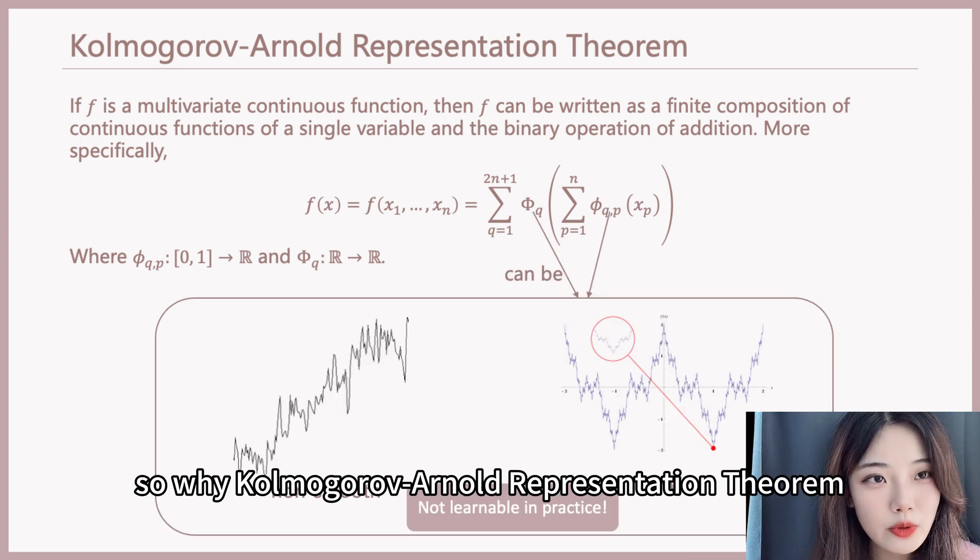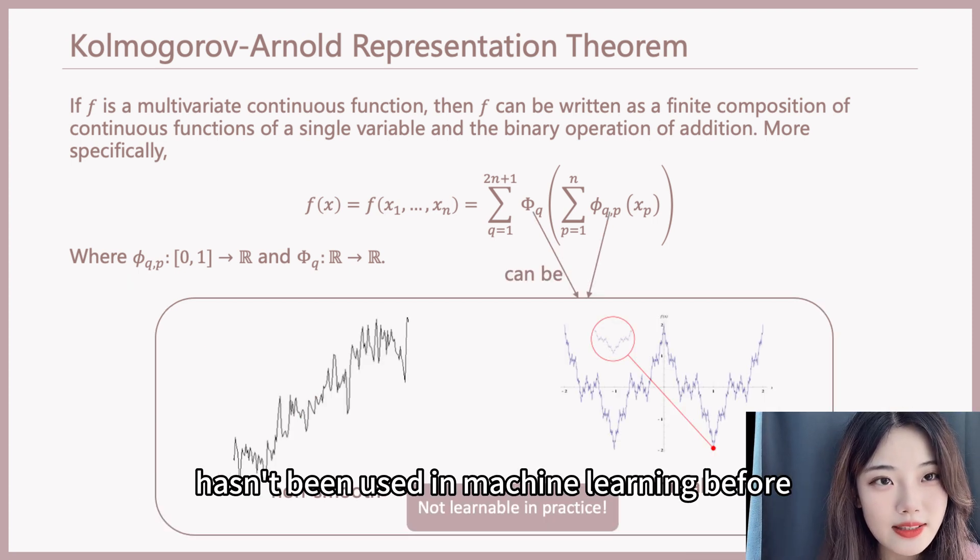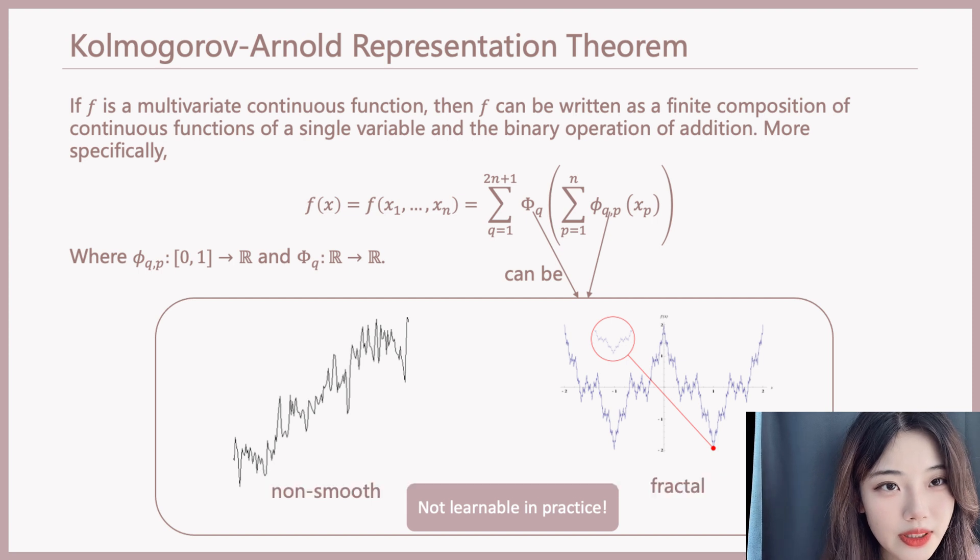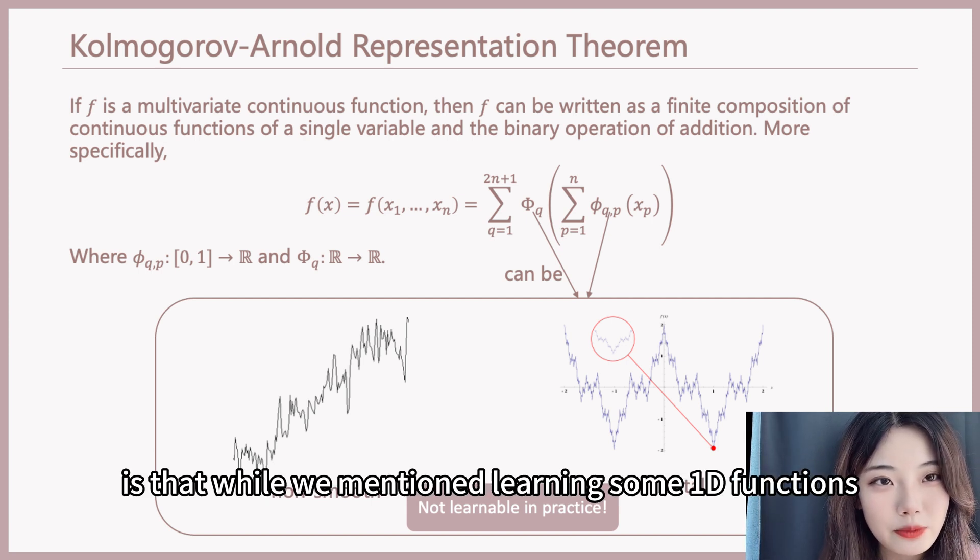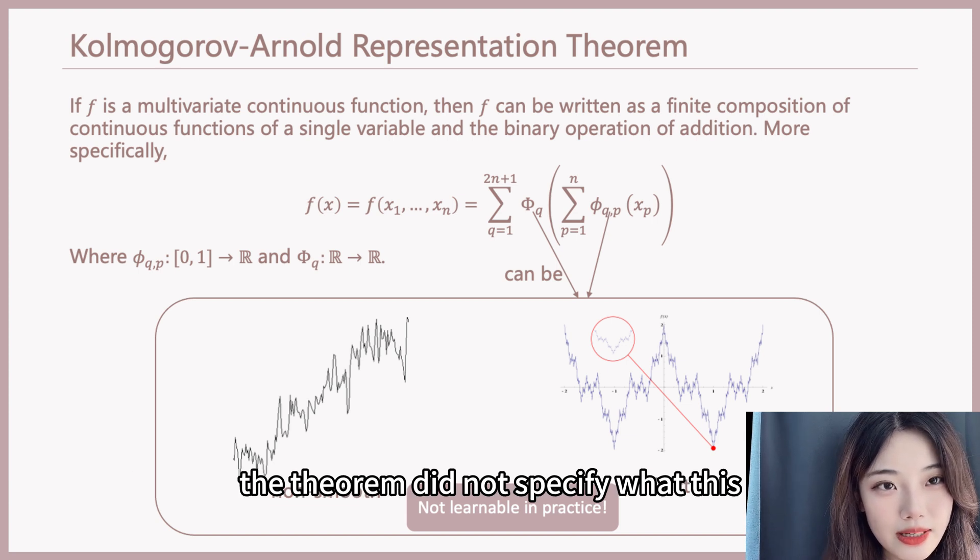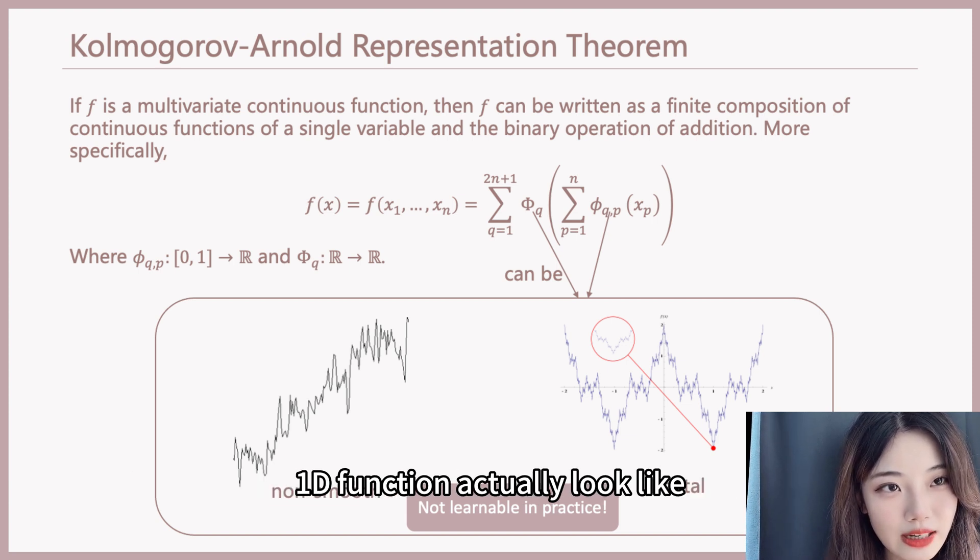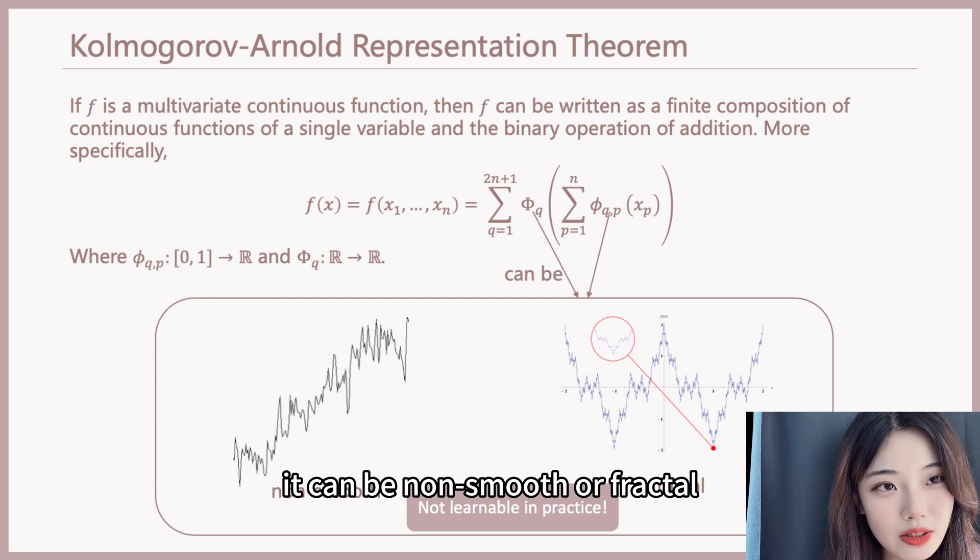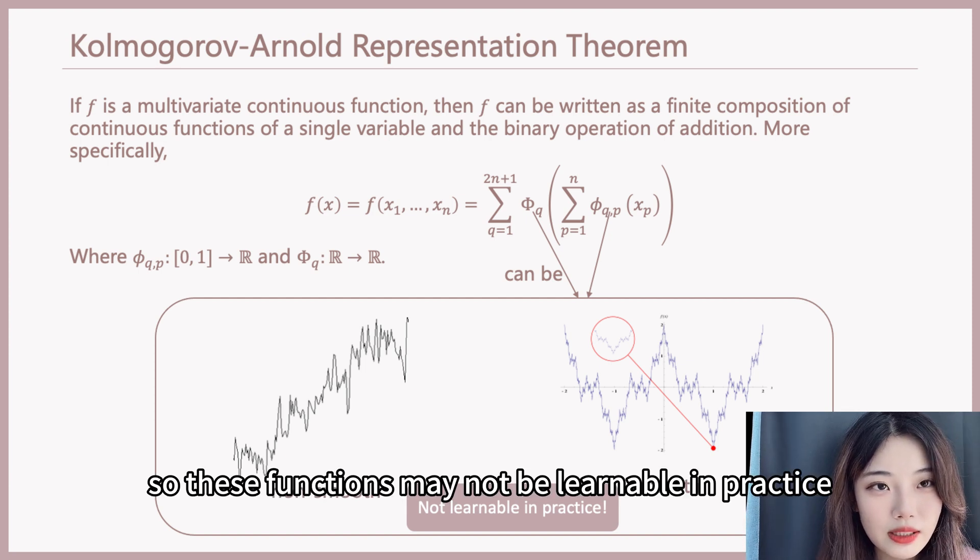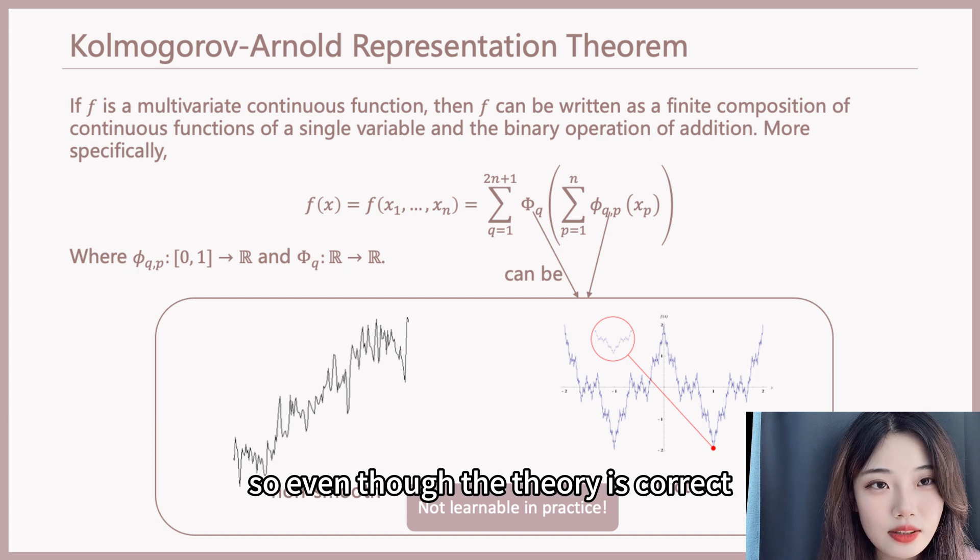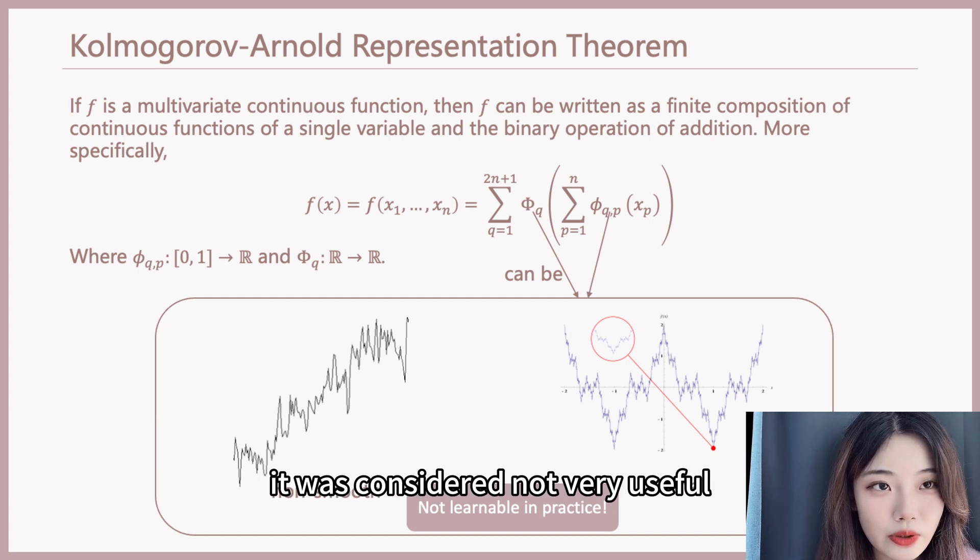So why hasn't Kolmogorov-Arnold representation theorem been used in machine learning before? Even though it sounds so impressive. The reason is that while we mentioned learning some 1D functions, the theorem did not specify what this 1D function actually looked like. It can be not smooth or fractal. So these functions may not be learnable in practice. So even though the theory is correct, it was considered not very useful.